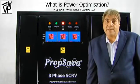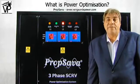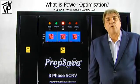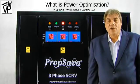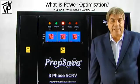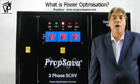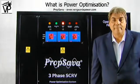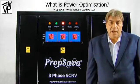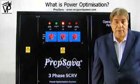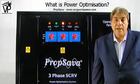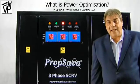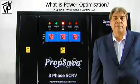Sometimes power optimization is referred to as voltage optimization, and it is a process of reducing and managing over voltage main power supply. Over voltage is a term used to describe the value of voltage supplied at the mains which is greater than the country's stated voltage.